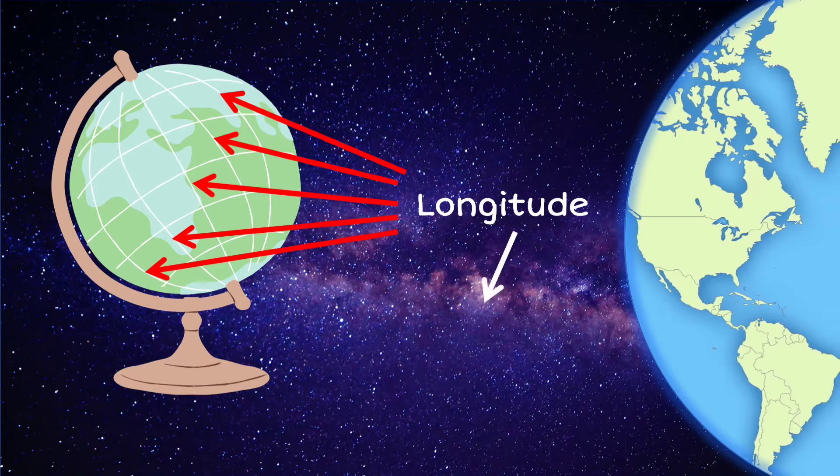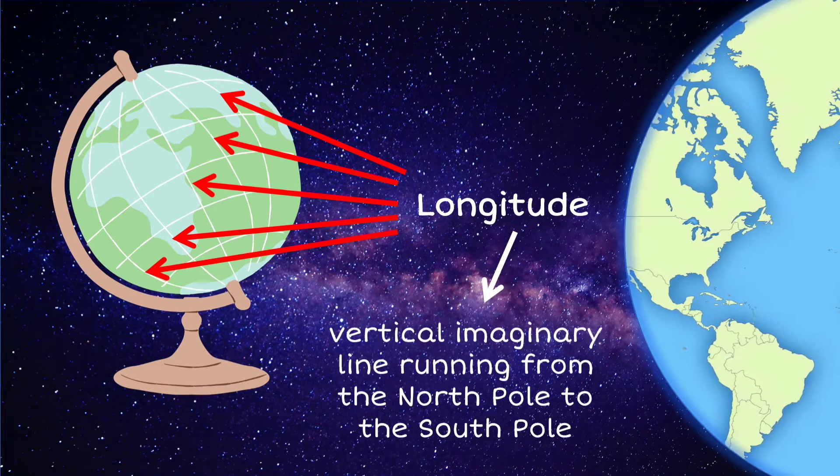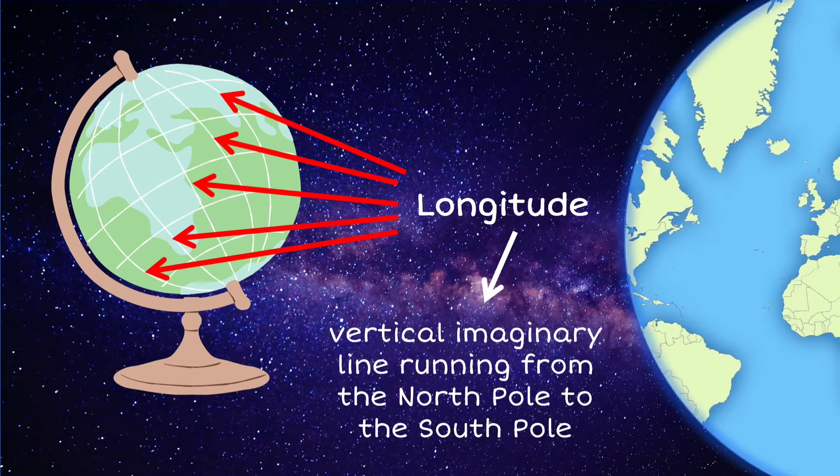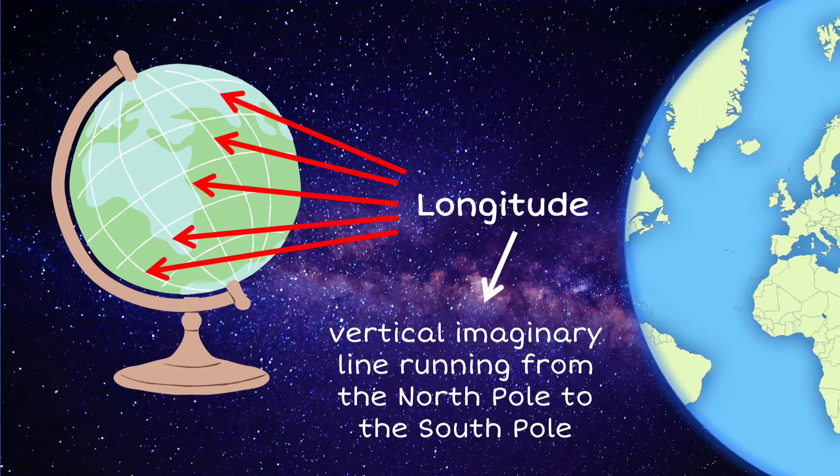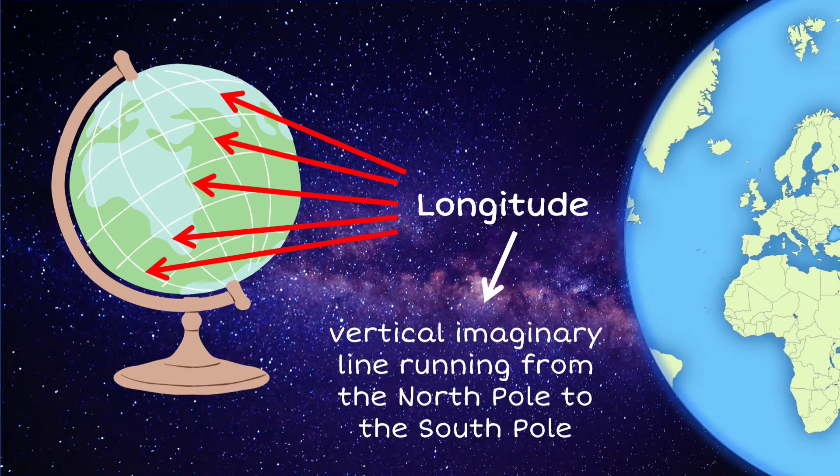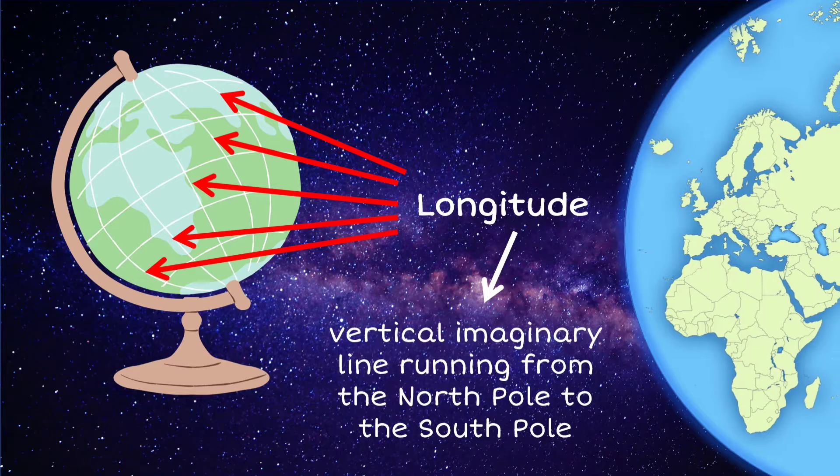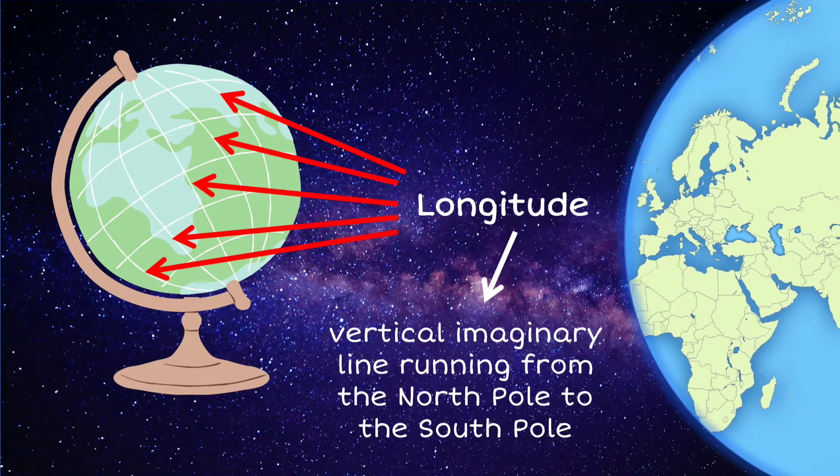Longitude is a vertical imaginary line running from the North Pole to the South Pole. It gives the measurements east or west of the prime meridian. Lines of longitude or meridians are important in setting time zones. These are measured in equal degrees per line.